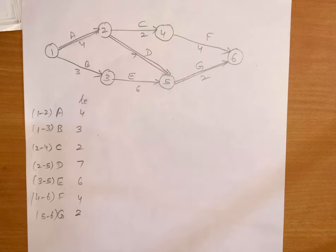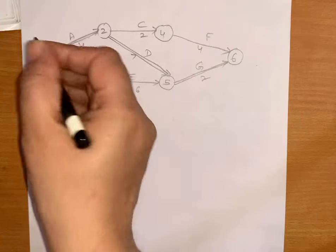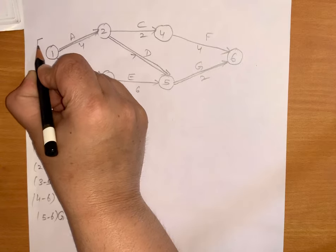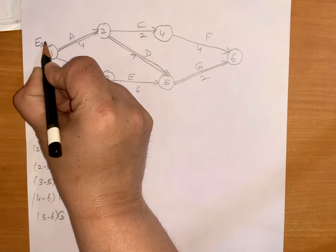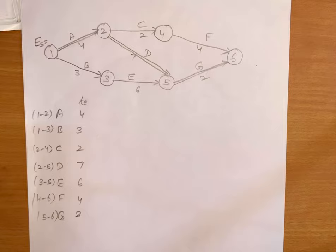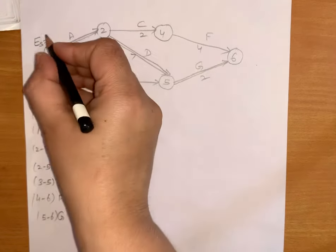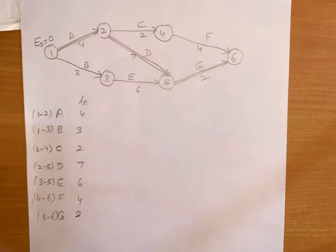Again I am taking the same illustration, example 13. Now today we will learn how to find out earliest start time. Earliest start time is denoted by ES, and for the initial event, earliest start is 0. So earliest start time for the first event is 0. Now we are to calculate earliest start time for each event.